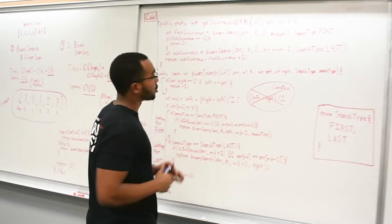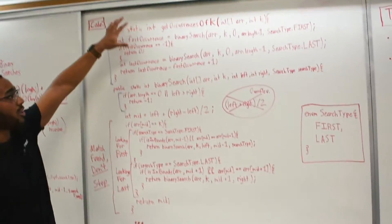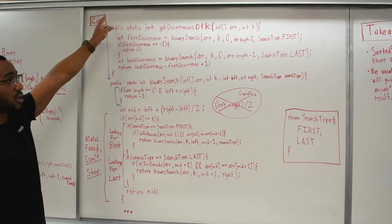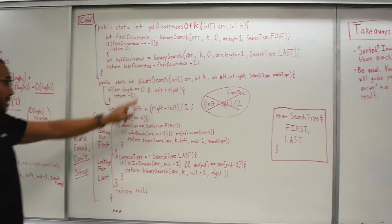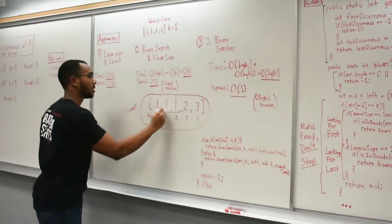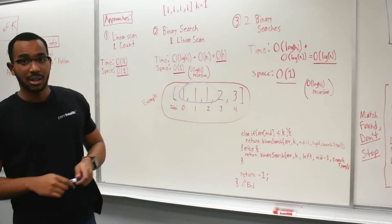So basically, this is the solution. So we find the first occurrence, if we don't find it, we're finished. And then if we do find the first occurrence, find the last occurrence, do the math, and then we have our answer. So that's basically it. That was a lot. I'm sorry.